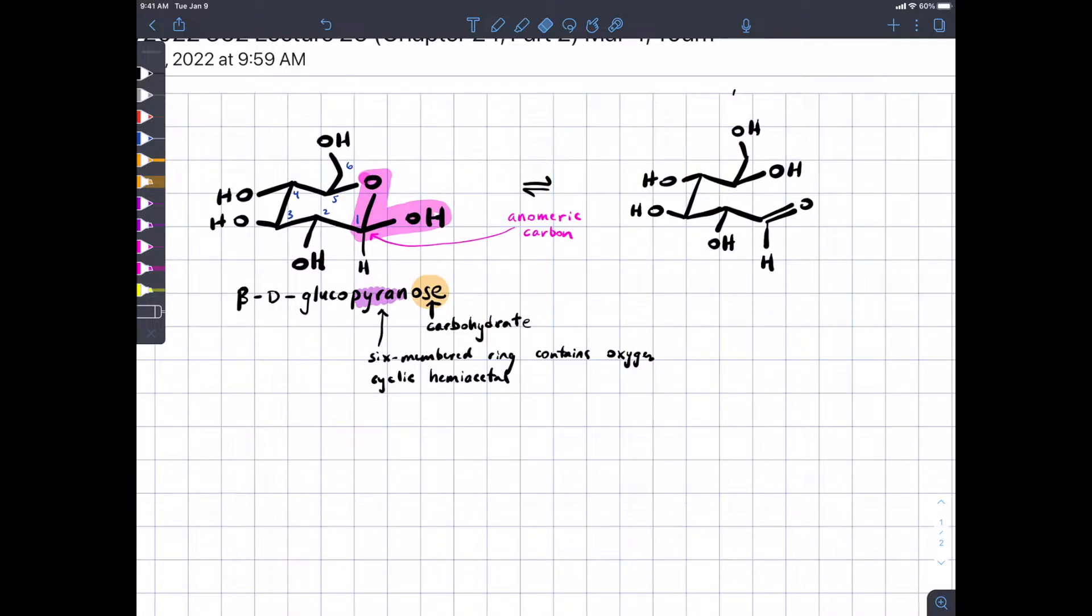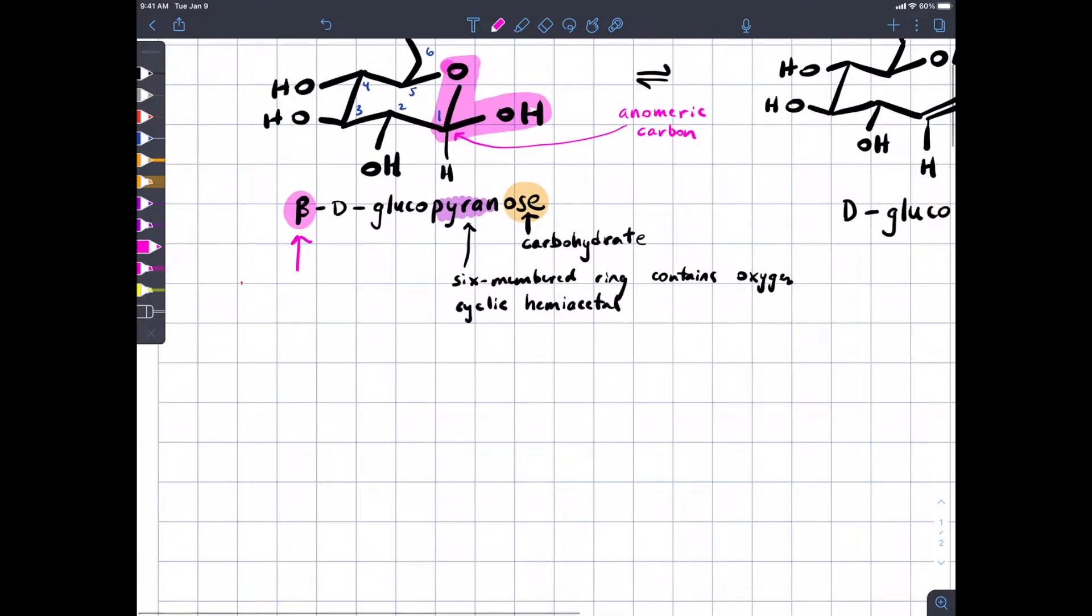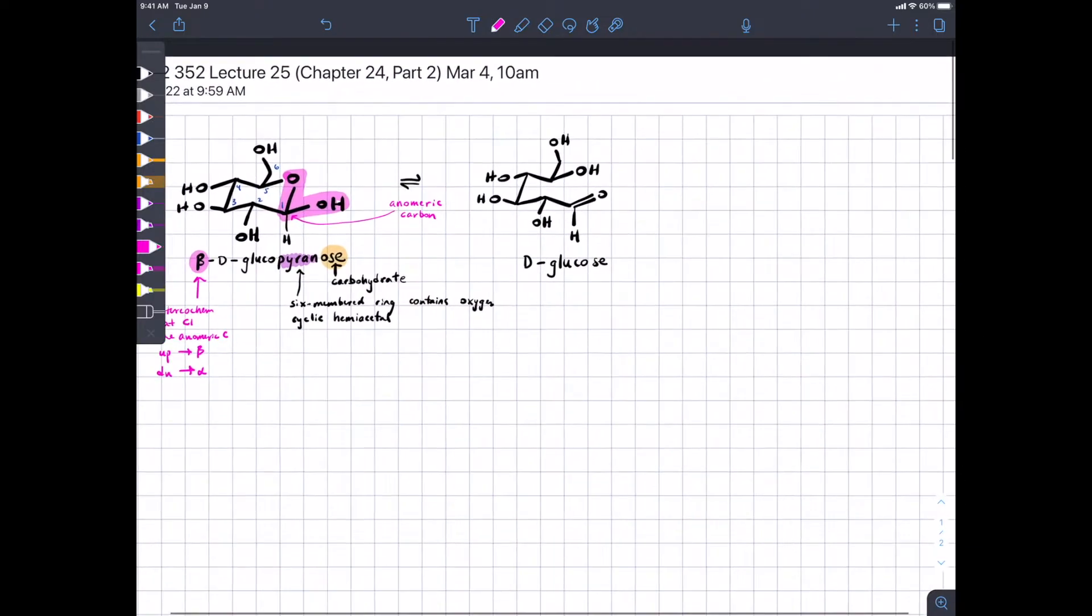Now, the open chain form is simply called D-glucose. So, where does the beta come from? And the beta refers to stereochemistry at carbon 1, stereochemistry at the anomeric carbon. So, if it's up, it's beta. If it's down, it's alpha.